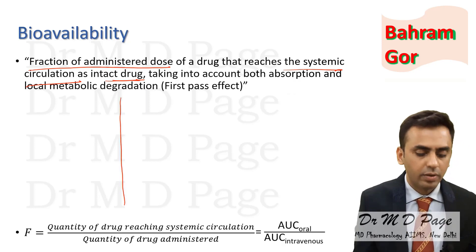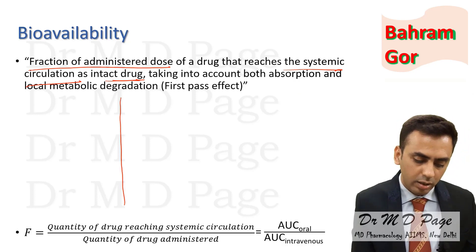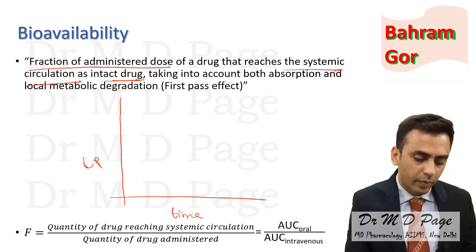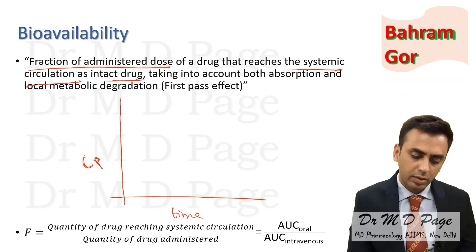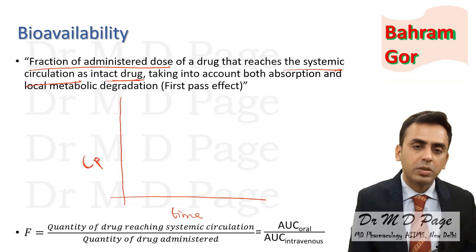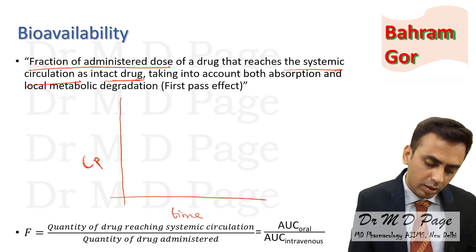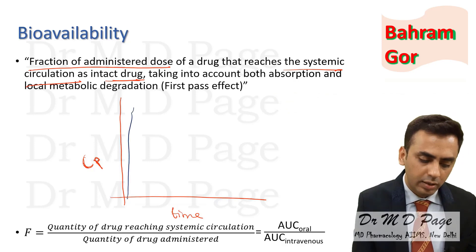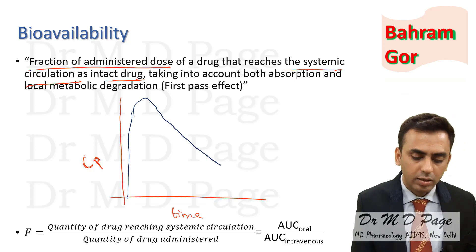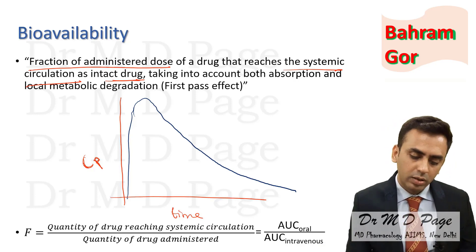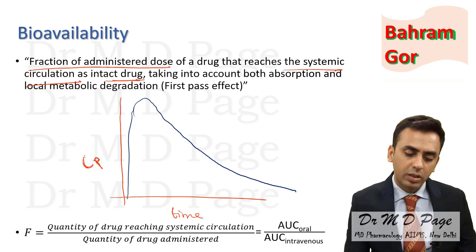Now consider plotting plasma concentration on one axis and time on another axis. For the IV route, the drug comes into systemic circulation very rapidly and then starts declining due to metabolism or excretion. This is the plasma concentration-time curve for an IV drug.